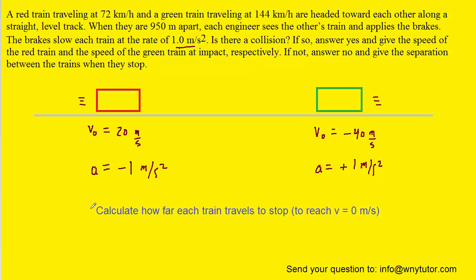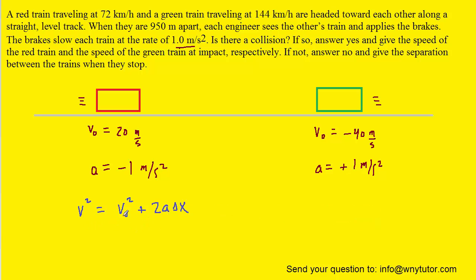Our strategy will be as follows: we want to calculate how far each train must travel in order to stop. When we stop, that means the final velocity is 0 meters per second. To do that, we can use the following equation from kinematics. We're going to be solving for delta x, the displacement, and we can subtract v-naught squared from both sides of the equation, then divide both sides by 2a.